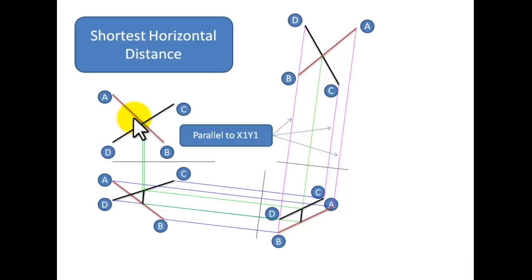That's how you find the shortest horizontal distance and the shortest distance between two skew lines.